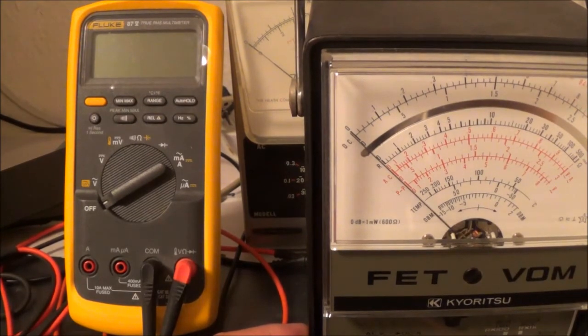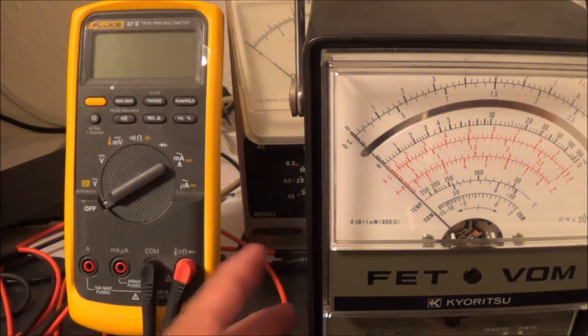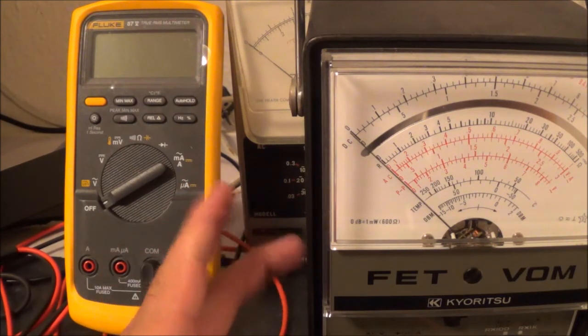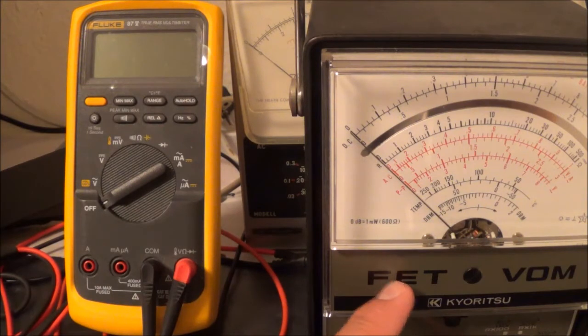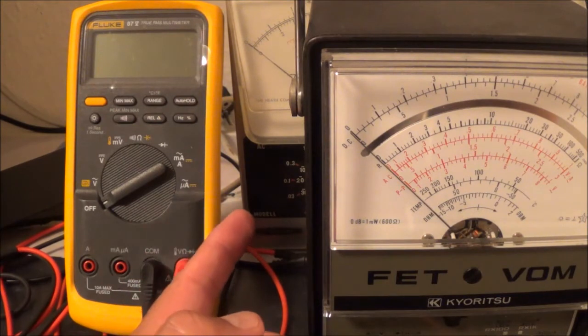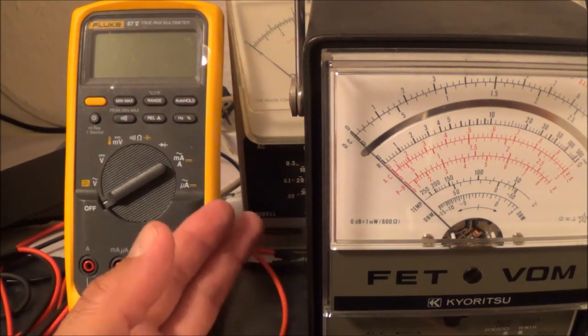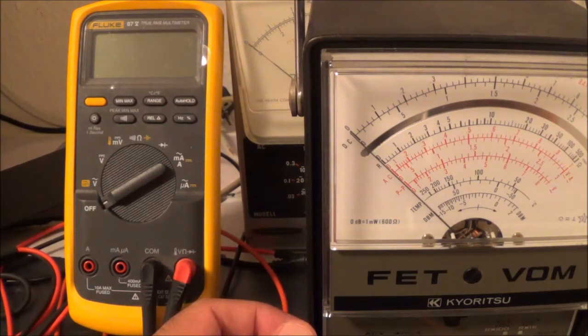So you could, for example, I can measure like the output from a cartridge or something like that from a record player. Again, that would have an advantage, this one would have an advantage over this one because this one only goes down to 300 millivolts. Or say if you were doing like a noise, you want to do like a signal to noise check, the Heathkit would be more accurate.